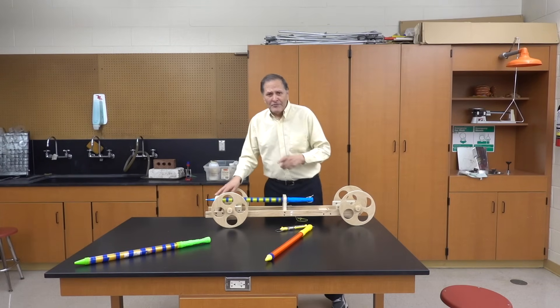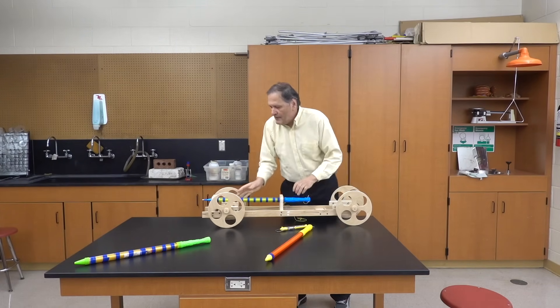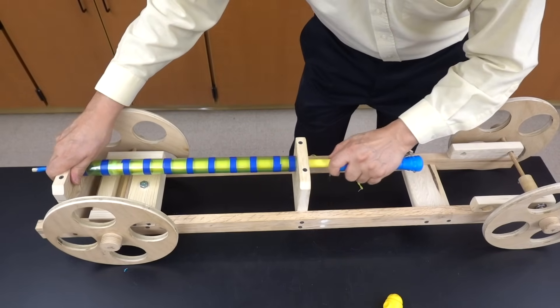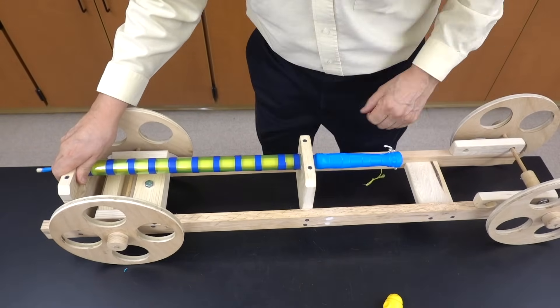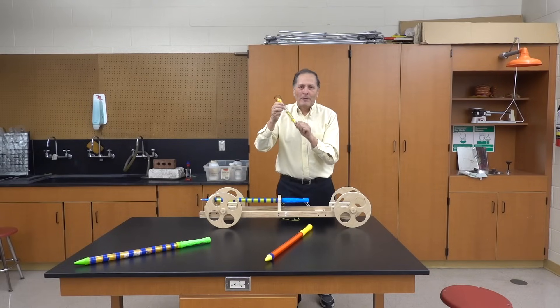Now with a good seal it does take quite a bit of effort to pull this plunger out and that force should be consistent for the length of this whole tube. We can test that using a simple spring scale.